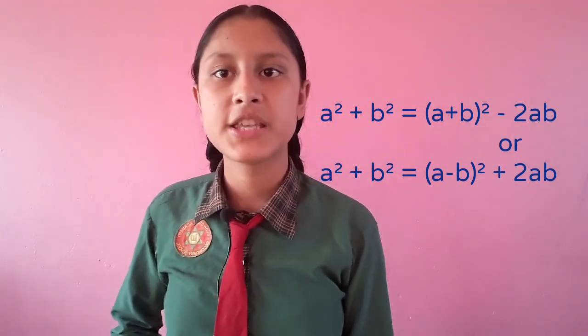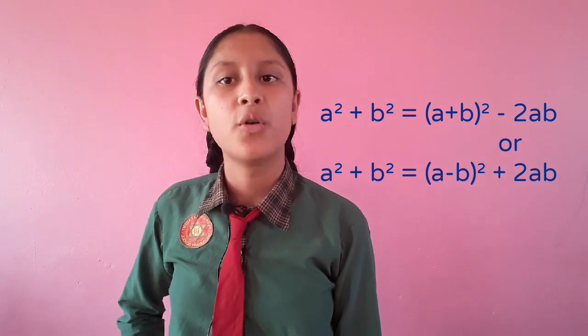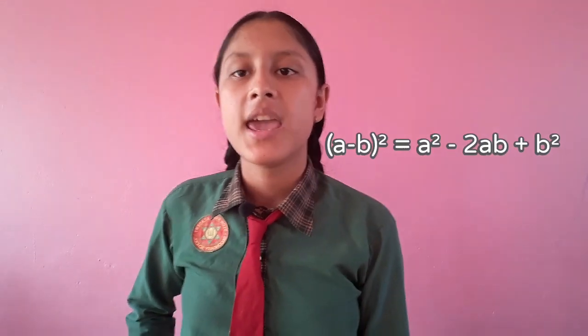First, a square minus b square equals to a plus b into a minus b. Second, a square plus b square equals to a plus b whole square minus 2ab. Third, a plus b whole square equals to a square plus 2ab plus b square. And a minus b whole square equals to a square minus 2ab plus b square.